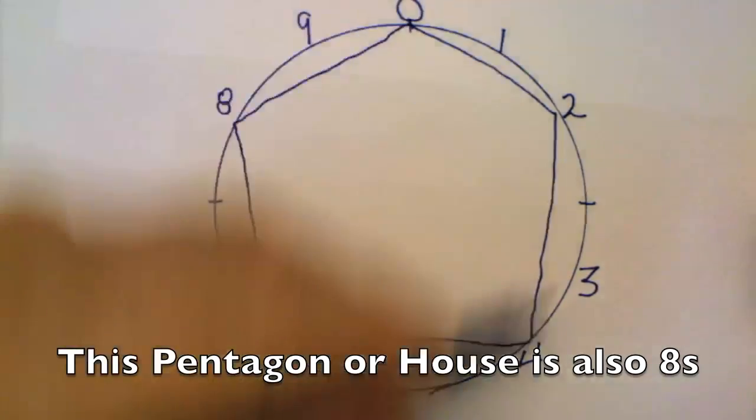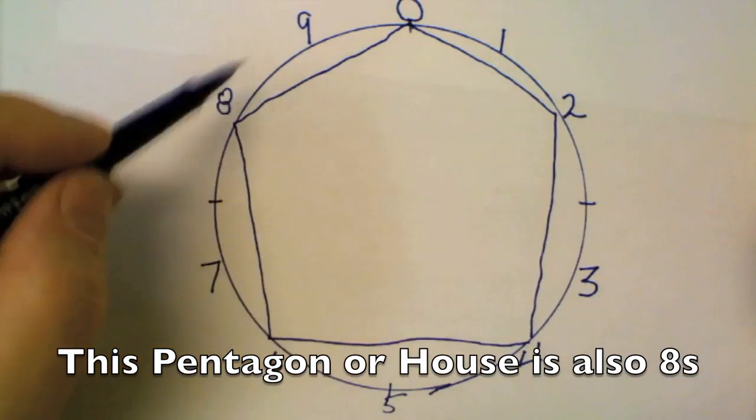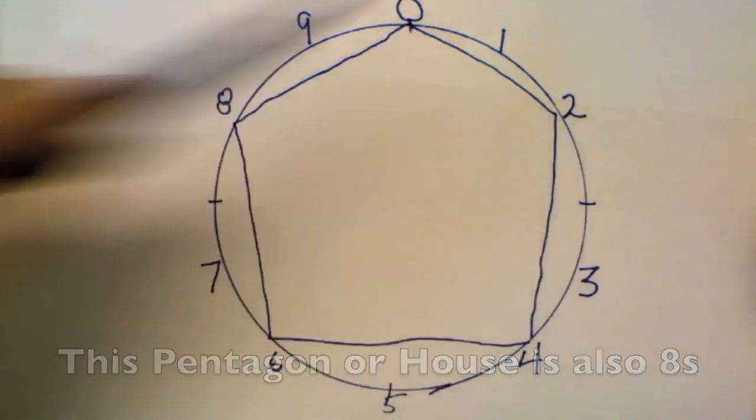Counting by twos: 2, 4, 6, 8, 10, then back to zero. And then the multiples: 8, 16, 24, 32, 40.